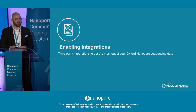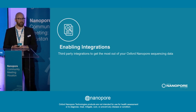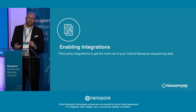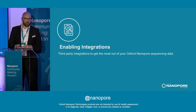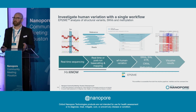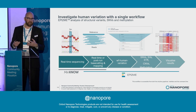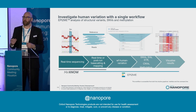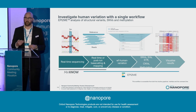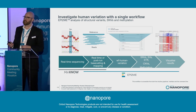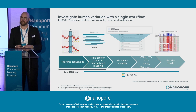We're also enabling integrations with third parties, which really helps you get the most out of your nanopore sequencing data. For example, the human variation workflow does a very deep analysis of all the different types of variation, including methylation, copy number variants, short tandem repeats, SNVs, SVs, and indels.